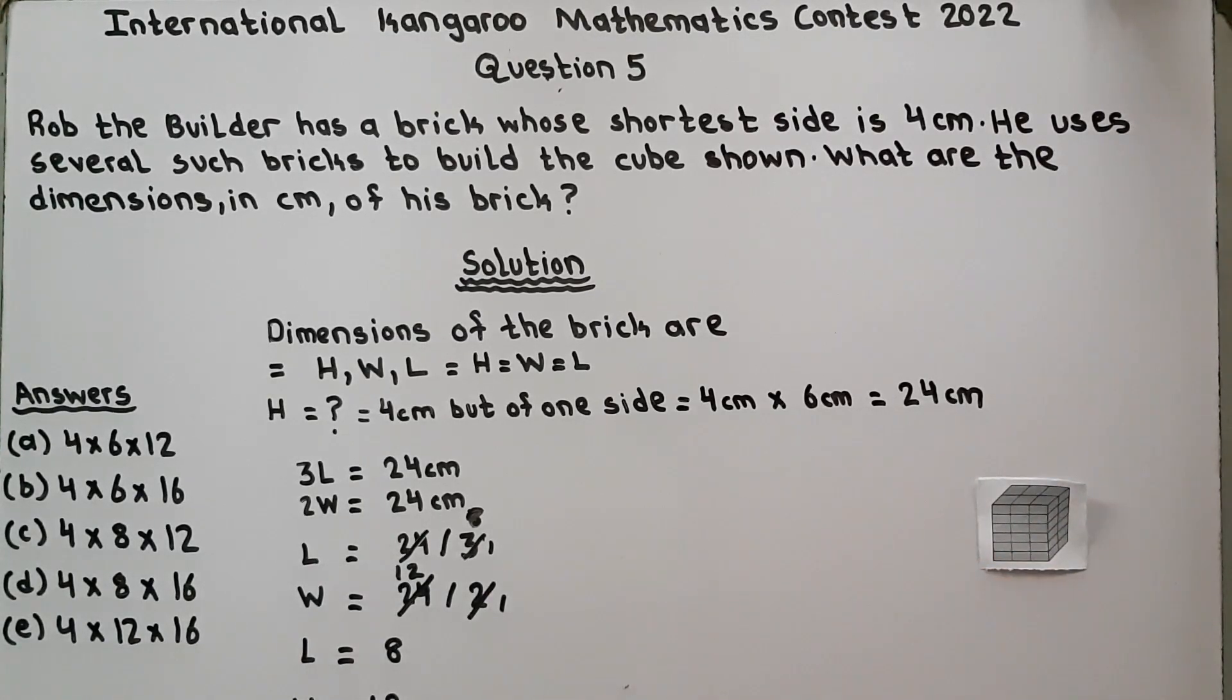Now we have found out the height as well as length and width. We will place them in the right order. 4 equals height, 8 equals length, and 12 equals width. 4 x 8 x 12 - here it is option number C. So our question is solved. It was a little bit tricky but it was easy.